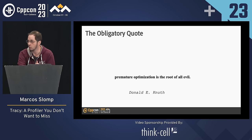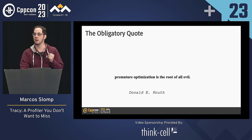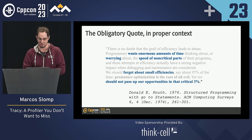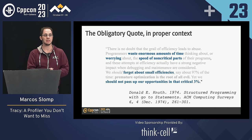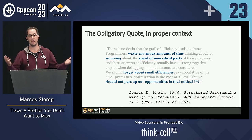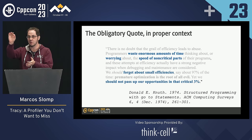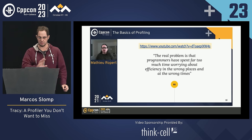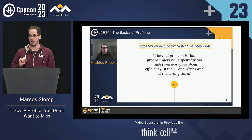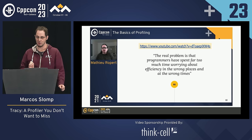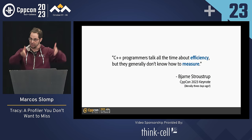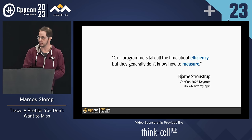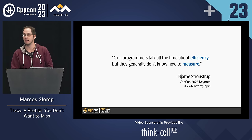Let's begin with some obligatory quotes. You're all familiar with 'premature optimization is the root of all evil.' Are you familiar with the rest of the quote? The thing here is not about premature optimization — it's that we tend to waste a lot of time worrying about performance in places that really don't matter. Bjarne, during the opening keynote three days ago, mentioned that C++ programmers tend to care a lot about efficiency but generally don't know how to measure. Hopefully I can help change that.